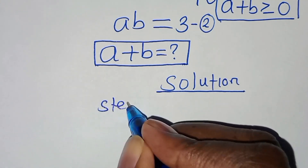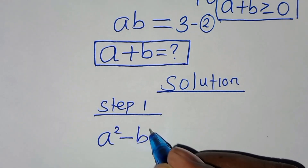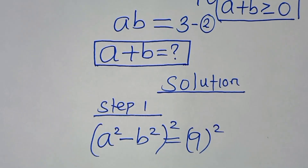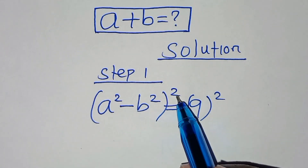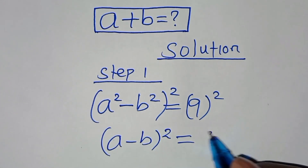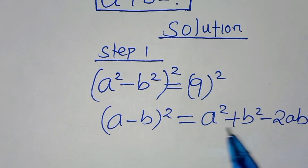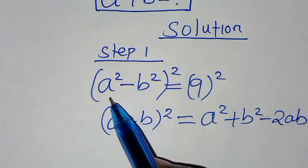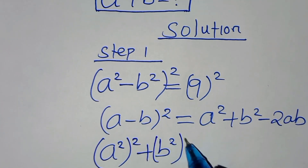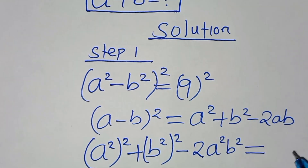In the first step, starting from equation 1 — a² - b² = 9 — let's square both sides. Then (a² - b²)² is in the form (a - b)², which expands as a² + b² - 2ab. Applying this algebraic identity, we get (a²)² + (b²)² - 2·a²·b² = 9² = 81.